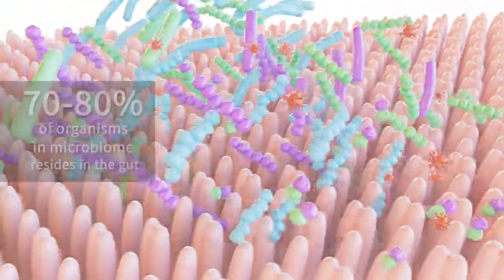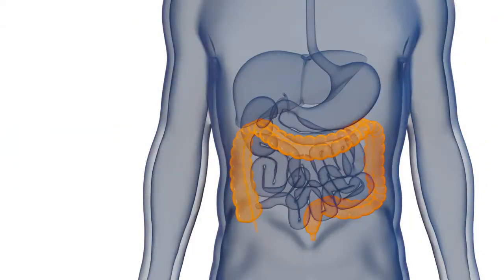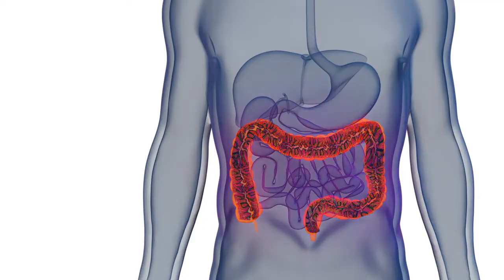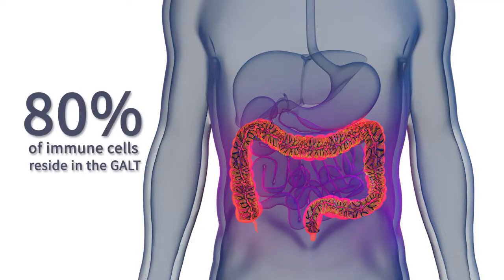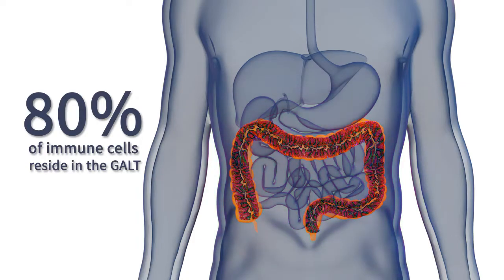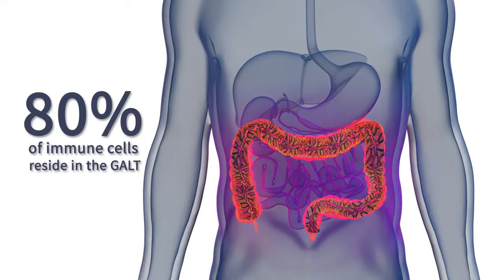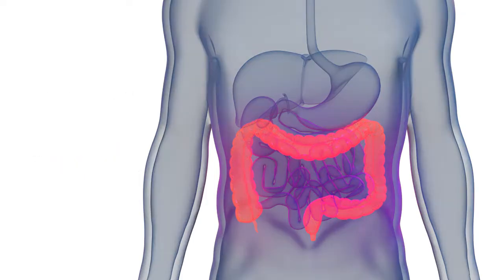The gastrointestinal tract also houses the gut-associated lymphoid tissue, or GALT, the largest organ in the immune system. The GALT serves as a reservoir for almost 80 percent of immune cells in the human body. This close physical approximation provides an ideal environment for the gut microbiome to influence the maturation and development of the immune system.